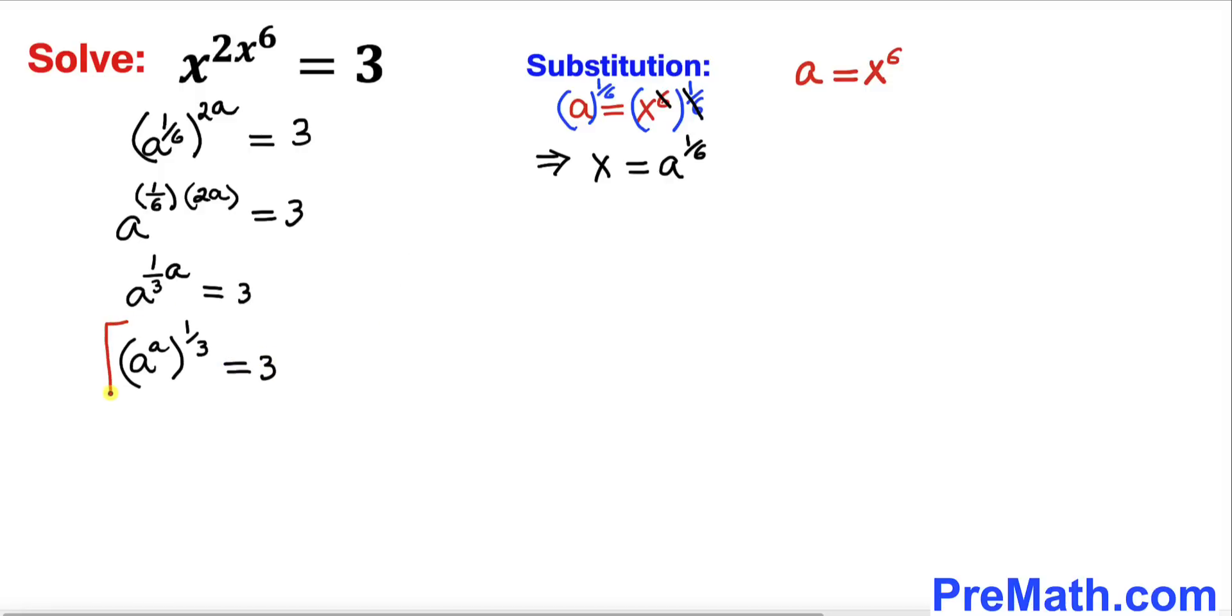And now let me take power 3 on both sides on this side and then power 3 on this side as well. And here on the left hand side this 1 third and 3 cancel each other out.